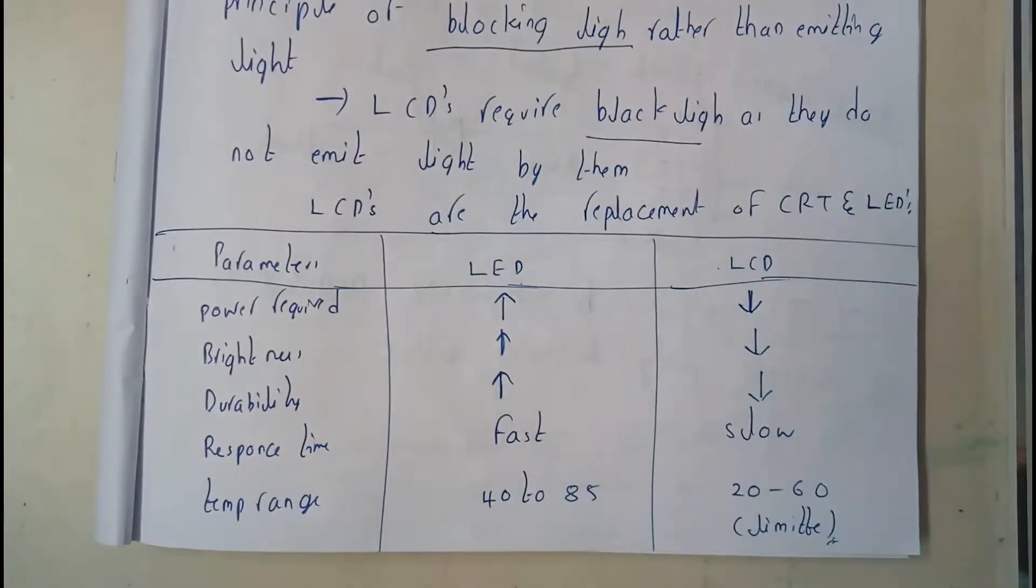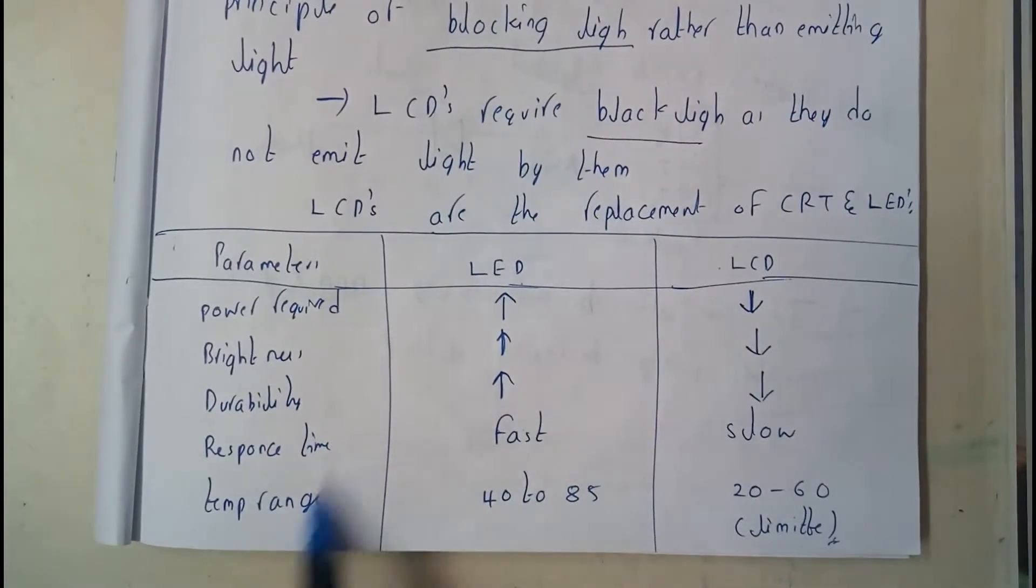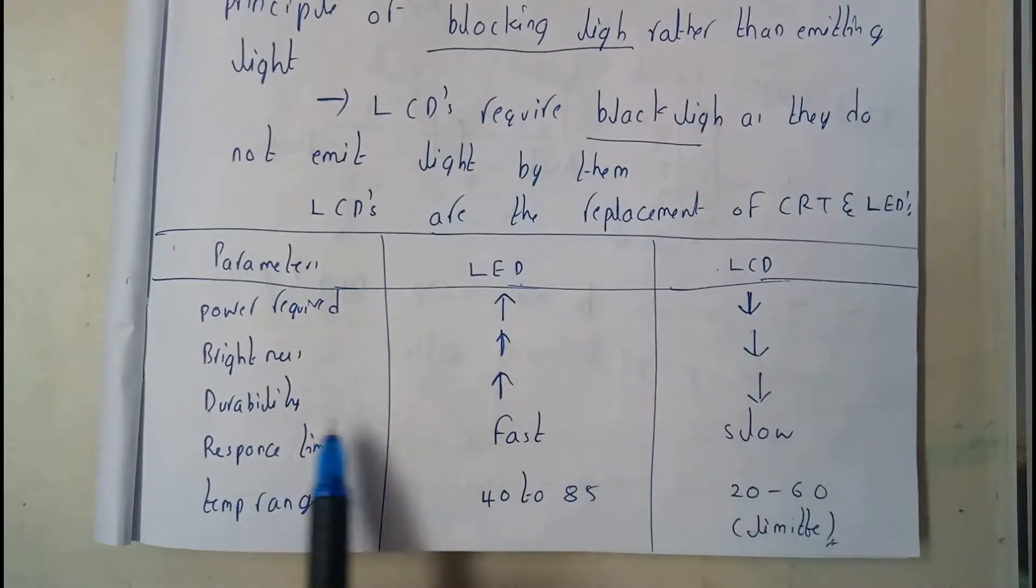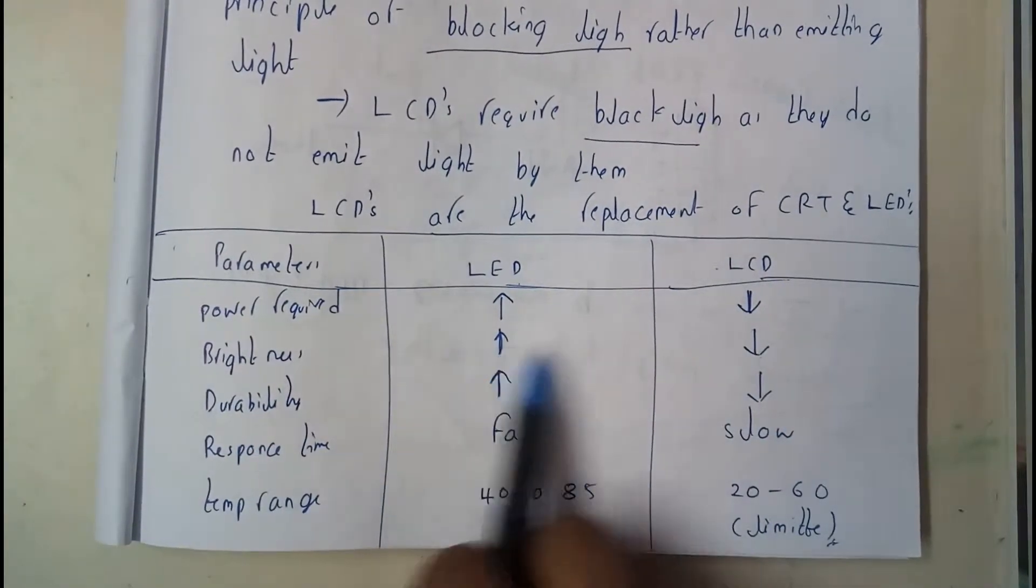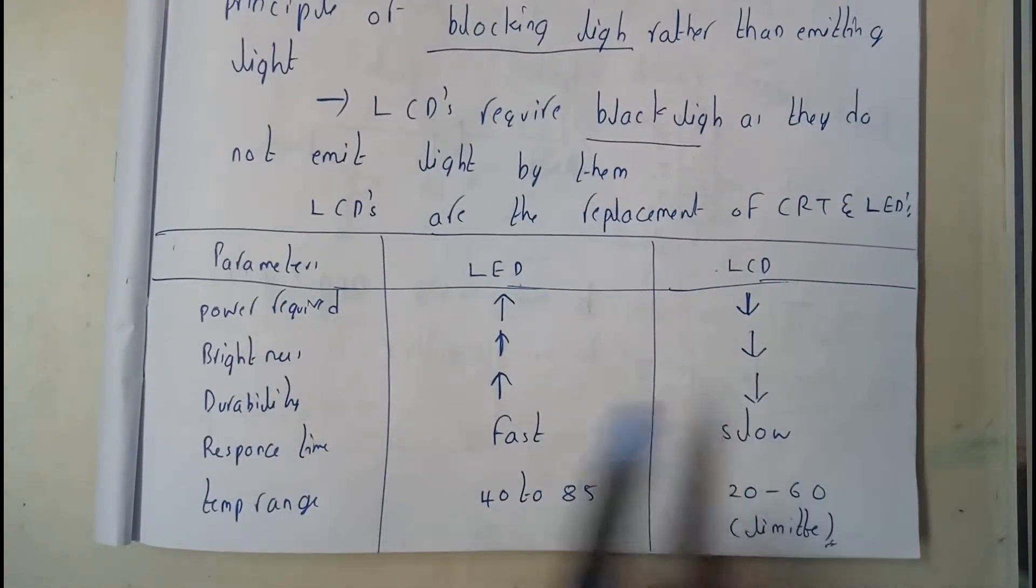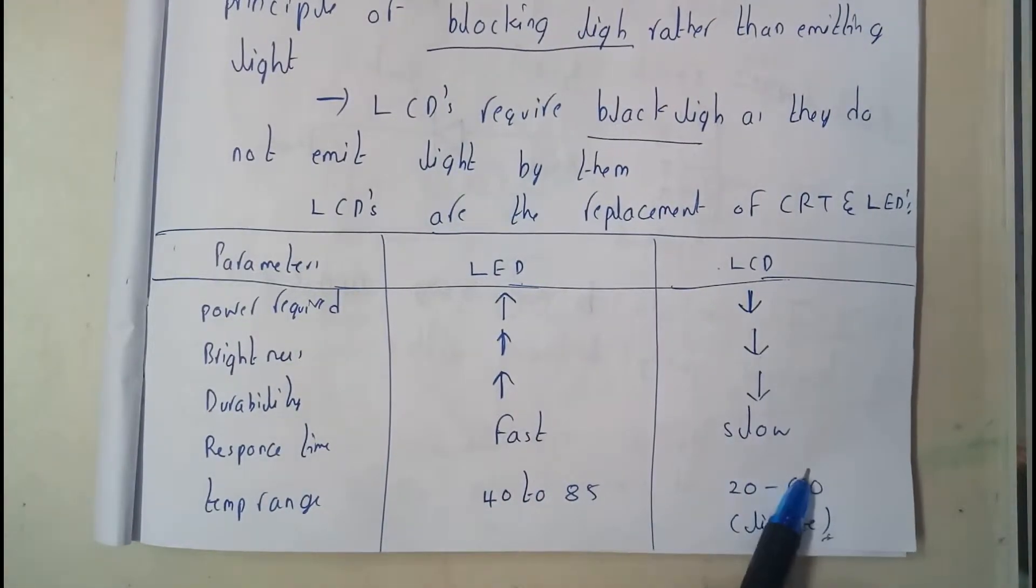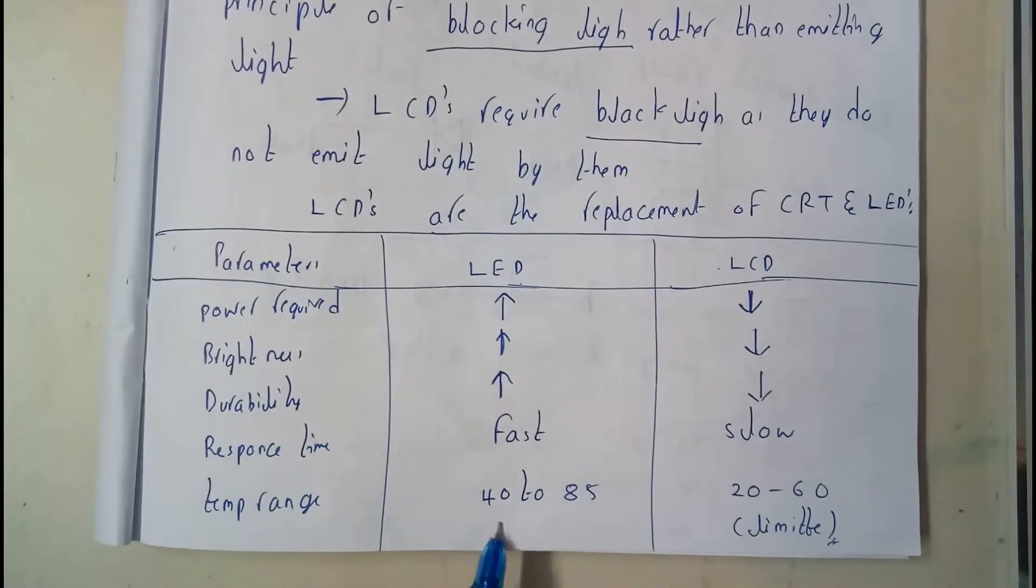Brightness of LED is more and LCD is less. Durability of LED is more, for LCD is less. Response time for LED is fast, for LCD is slow. Temperature range is 40 to 85 degrees for LED.